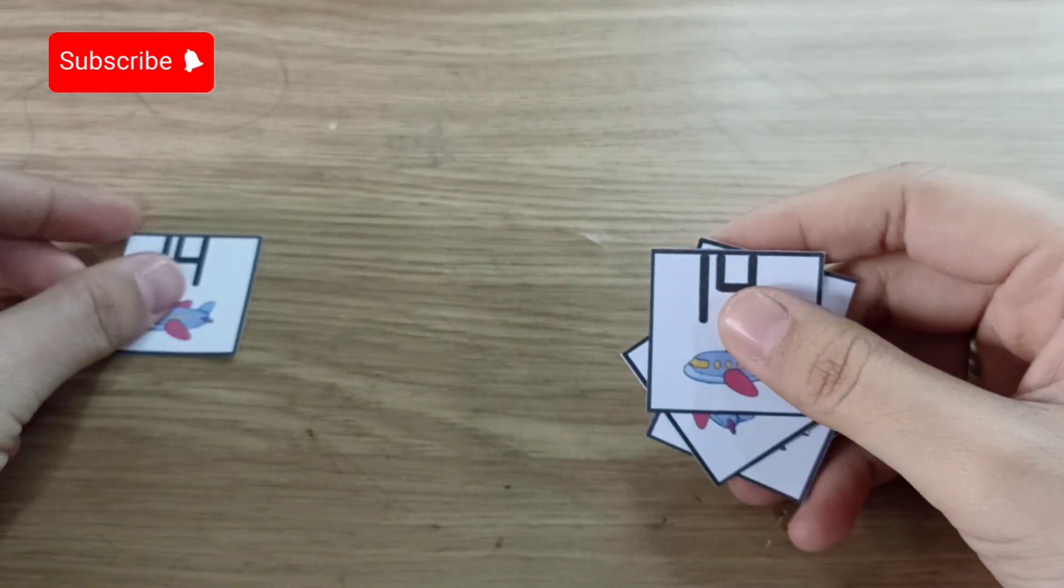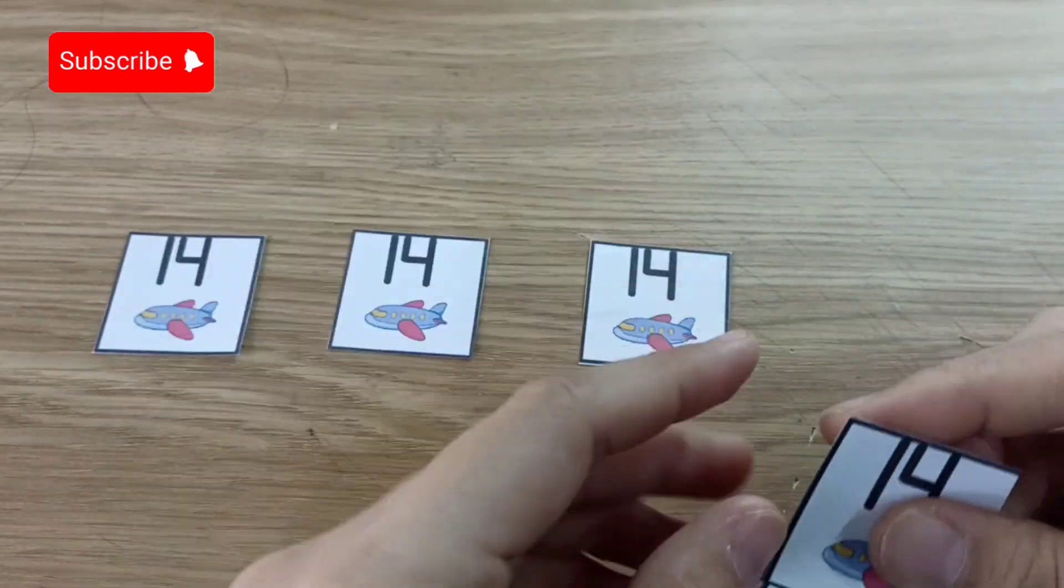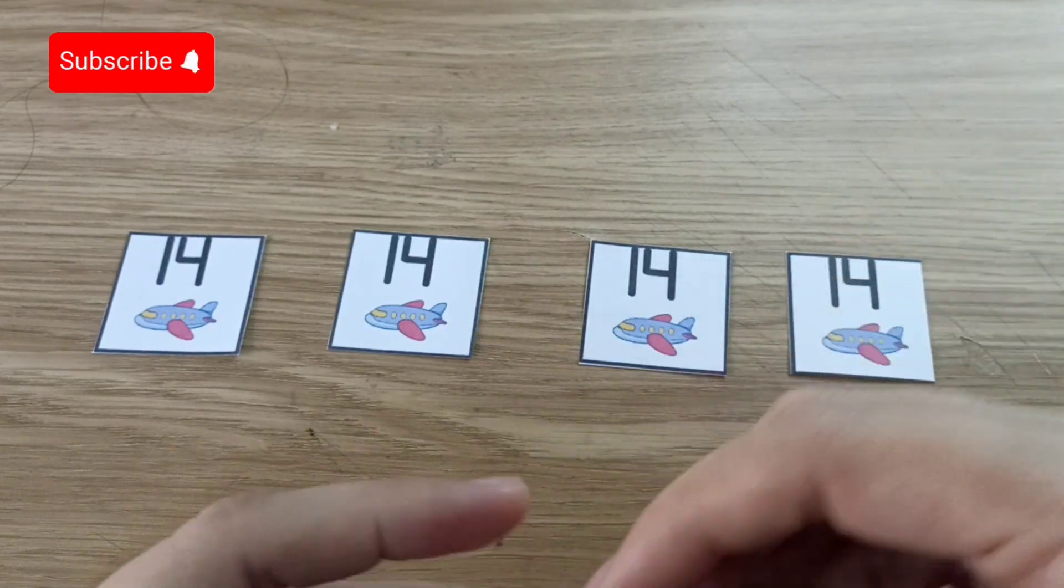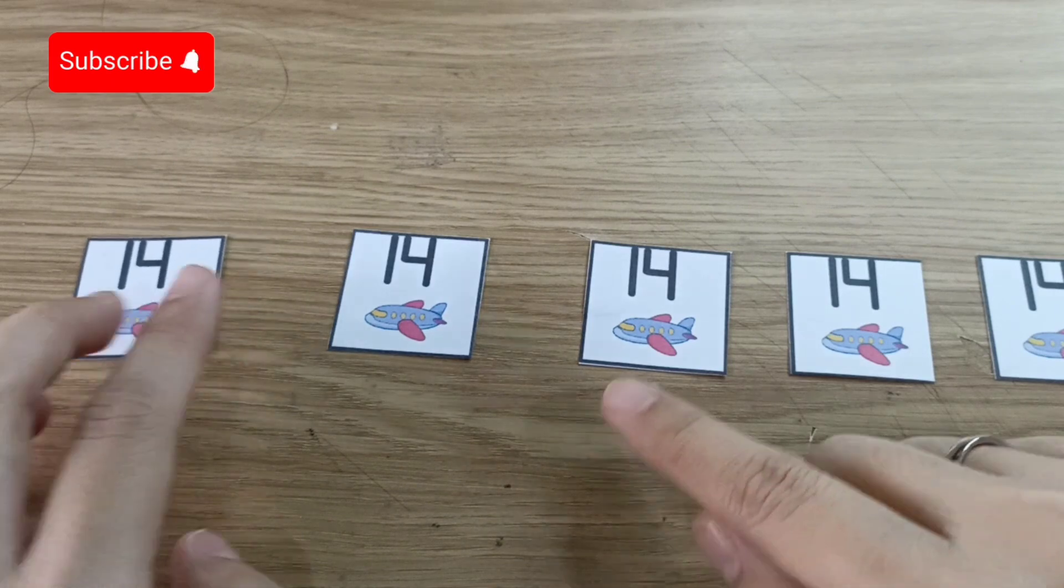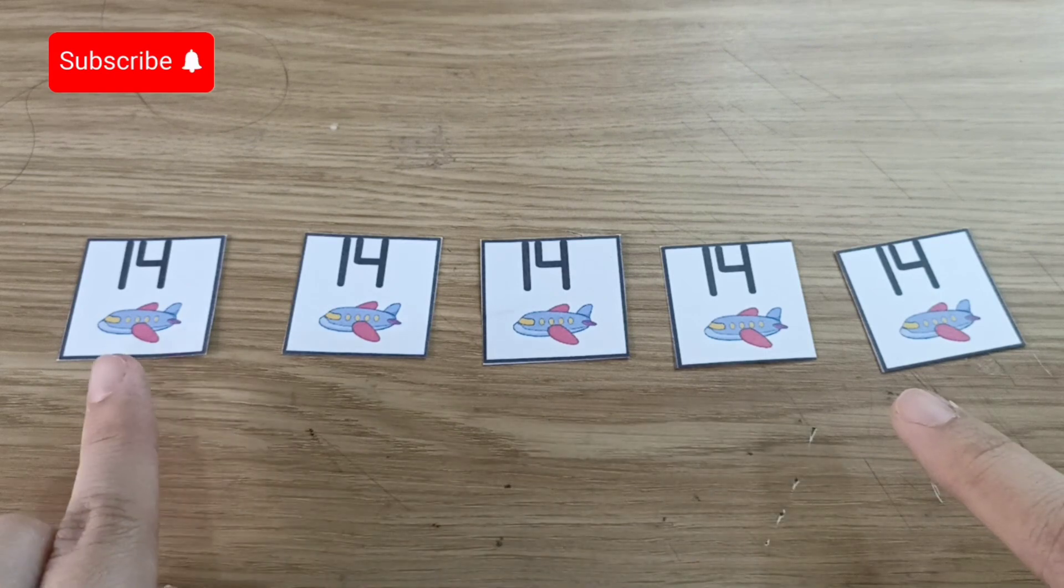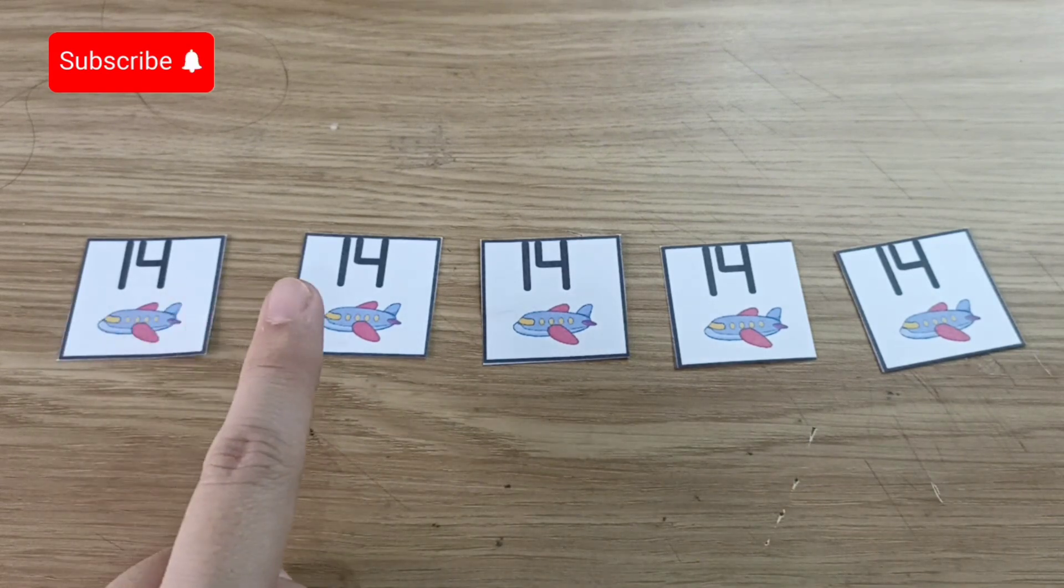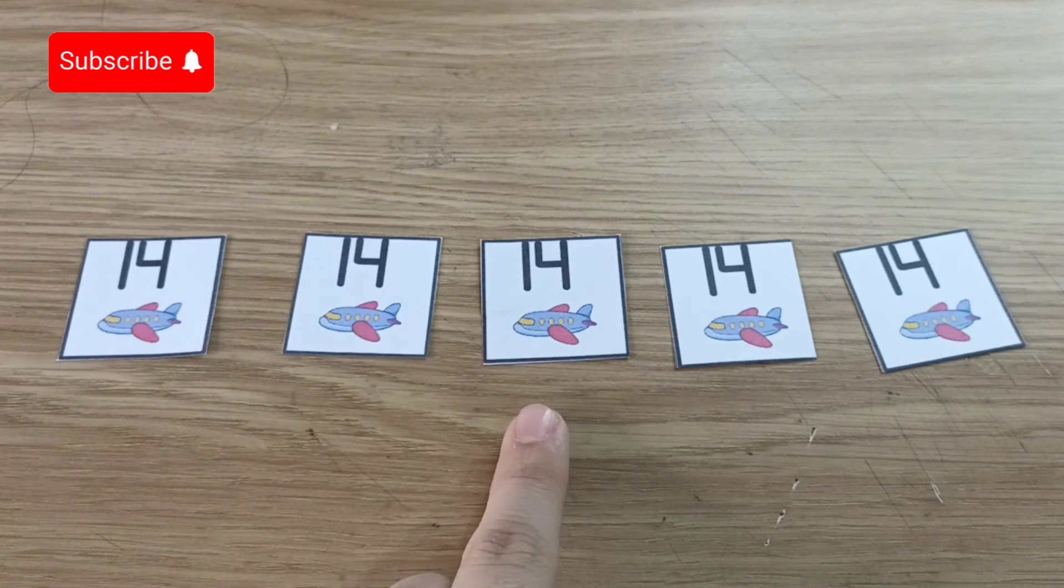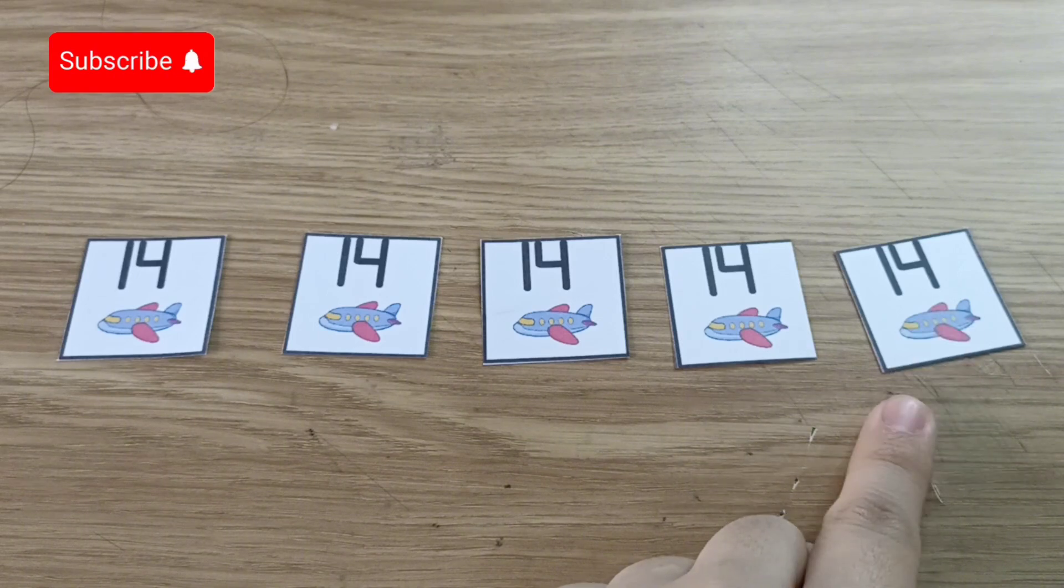Now you can put the papers on your table. Yes, 14, 14, 14. Now how about you children? Can you show it to me and say the number? 14, 14, 14. That's good.